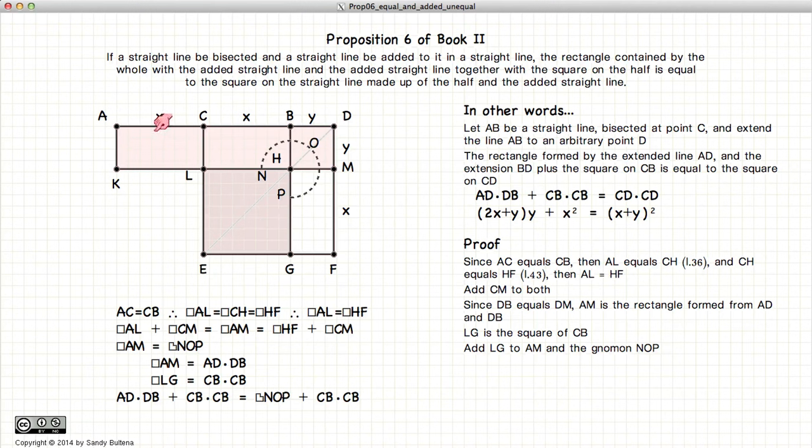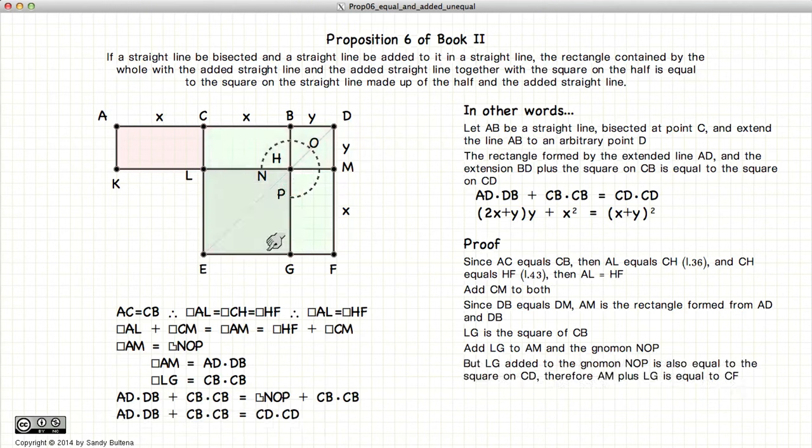And again, LG is equal to CB squared. So we have AD times BD, or AM, plus CB squared is equal to NOP plus CB squared. But NOP plus CB squared is equal to the square of CD. So thus we have demonstrated that AD times DB, or AM, plus CB squared which is LG, is equal to the square of CD.